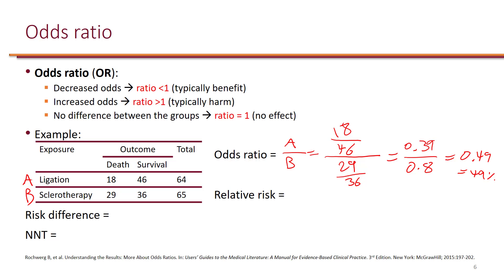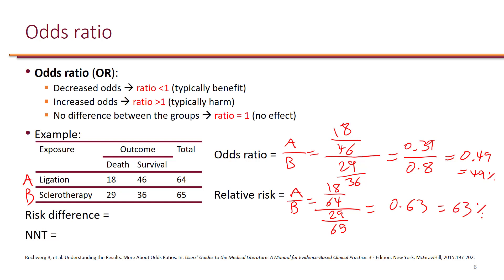If you were to calculate relative risk, because risk is probability, it's calculated differently. In group A, the risk of death is 18 out of 64. In group B, it is 29 out of 65, which gives 0.63 or 63%. So you get different numbers depending on whether you calculate relative risk or odds ratio.